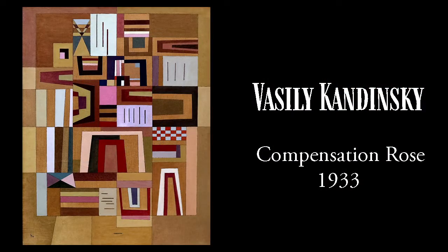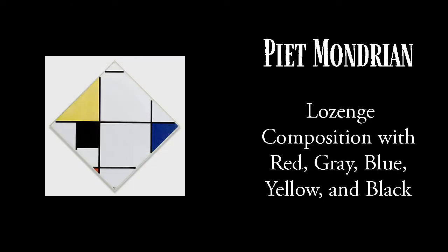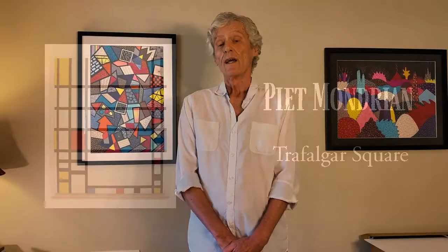Geometrical abstraction is an art form that became popular in Europe during the first half of the 20th century, and it's associated with artists like Vasily Kandinsky and Piet Mondrian. However, it's important to recognize that this art form really is universal. It appears, for example, in the art of many indigenous people. It appears in Native American art in many cases, and it's also very common in American quilts, so it really is a very universal form of art.